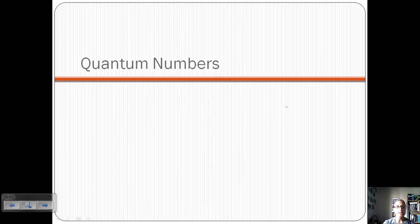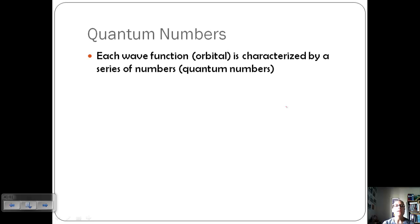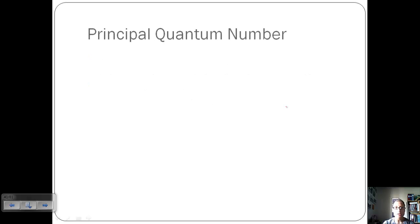Let's relate this to some other information known as quantum numbers. Each wave function, remember we're calling those orbitals, is characterized by a series of numbers called quantum numbers. And each quantum number describes a different property of the orbital. So we're going to go through some of those.